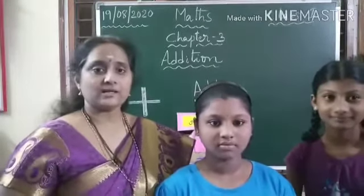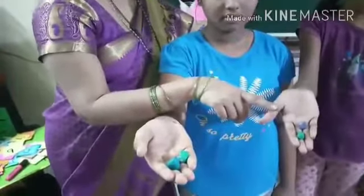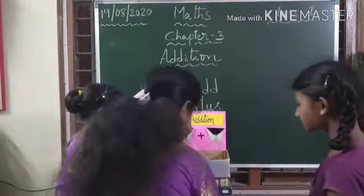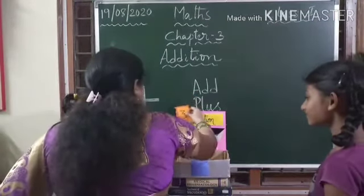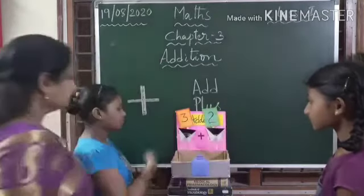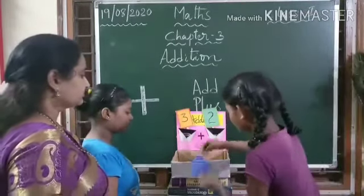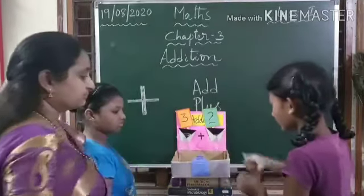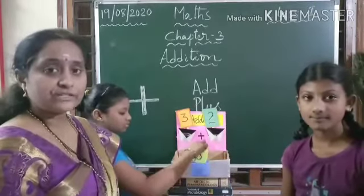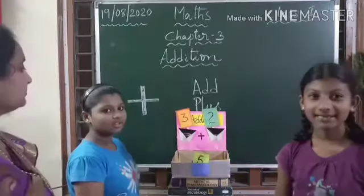Along with the shells, they also collected colorful stones. Sai collected three stones and Titiksha collected two stones. Let us count how many are there altogether. Sai: one, two, three. Titiksha: one, two. Titiksha, count how many are there? One, two, three, four, five. We have five colorful stones in all. So three plus two equals five.